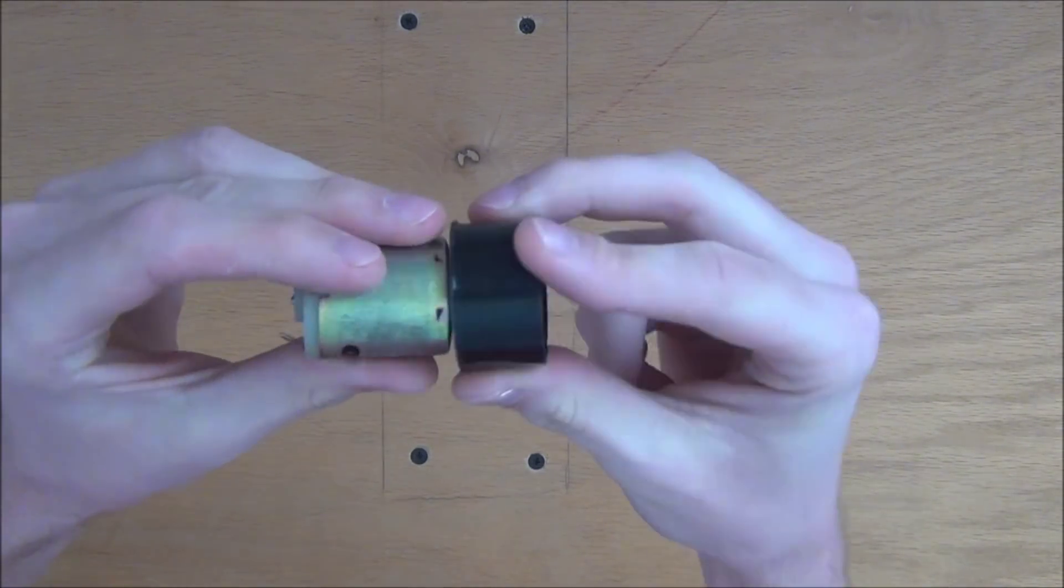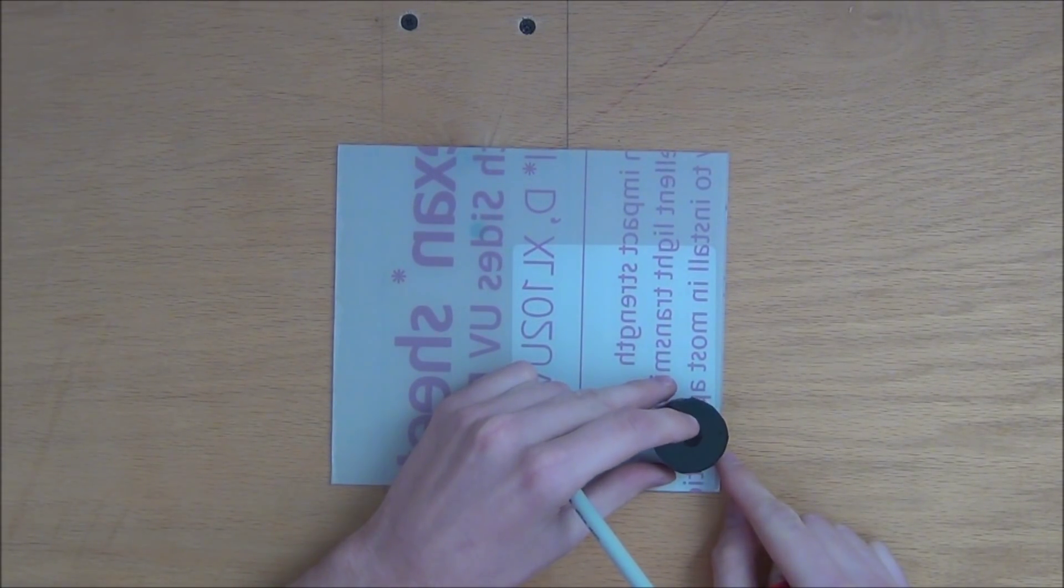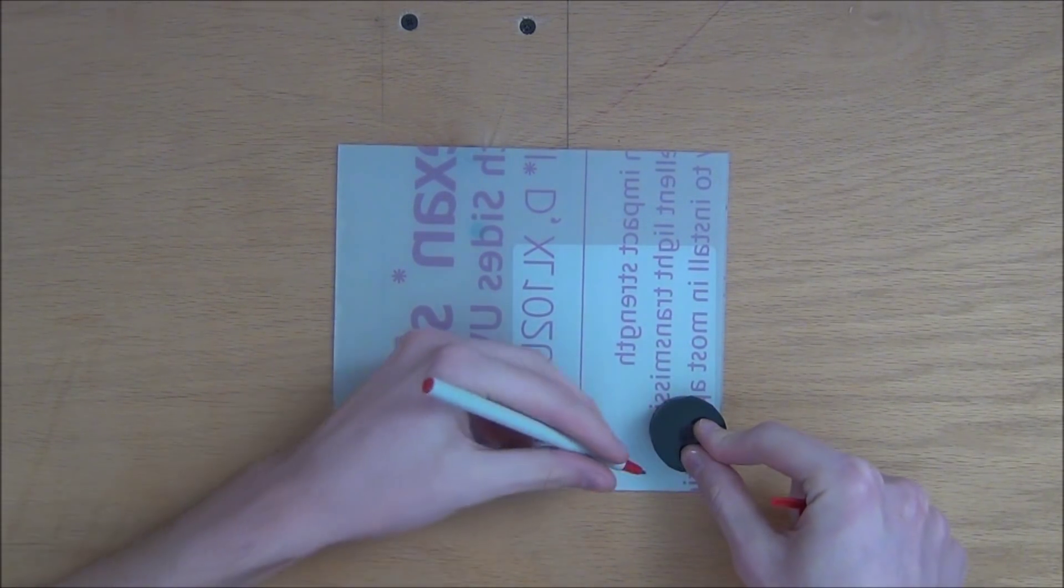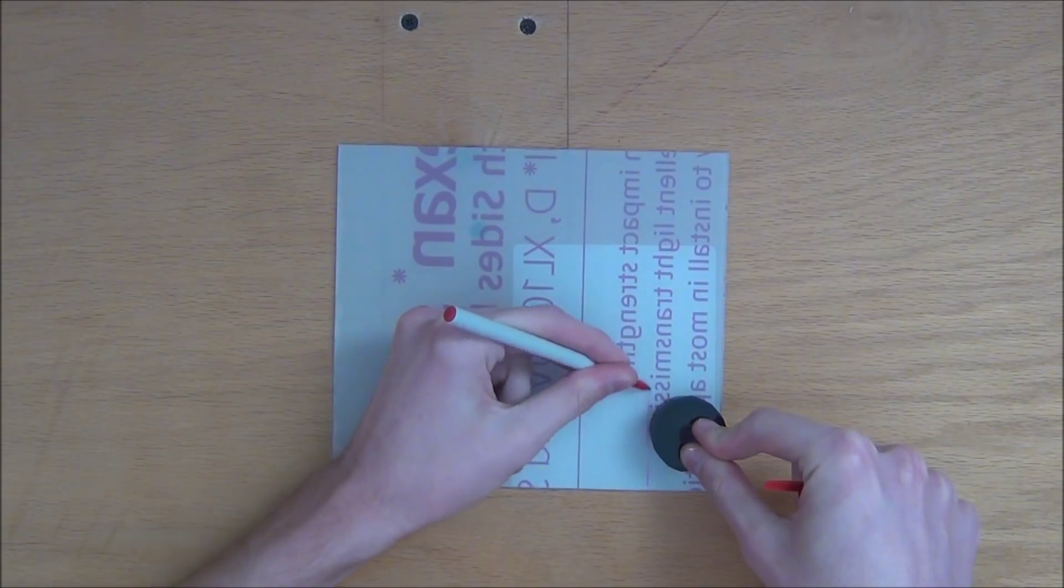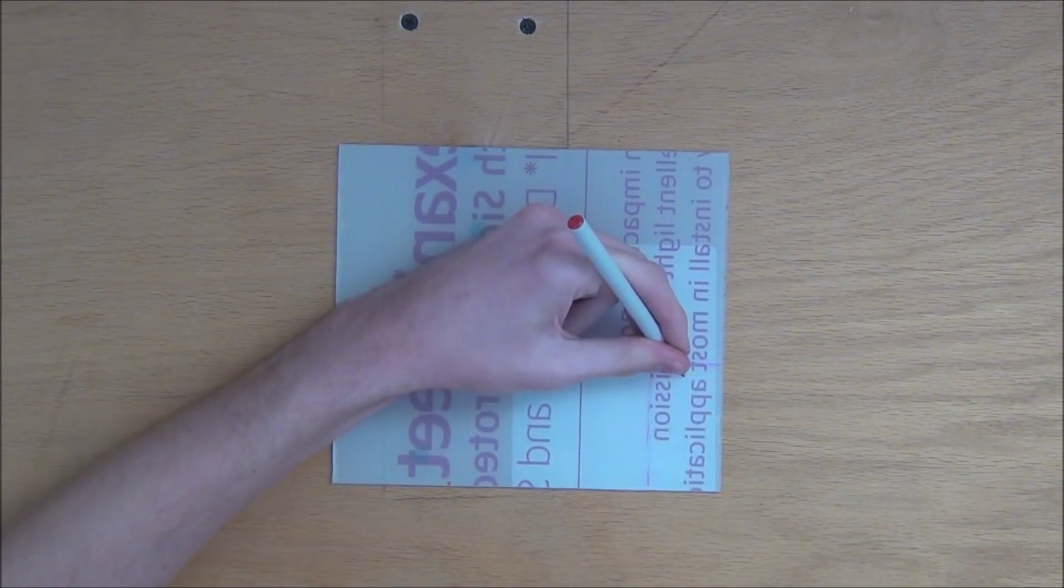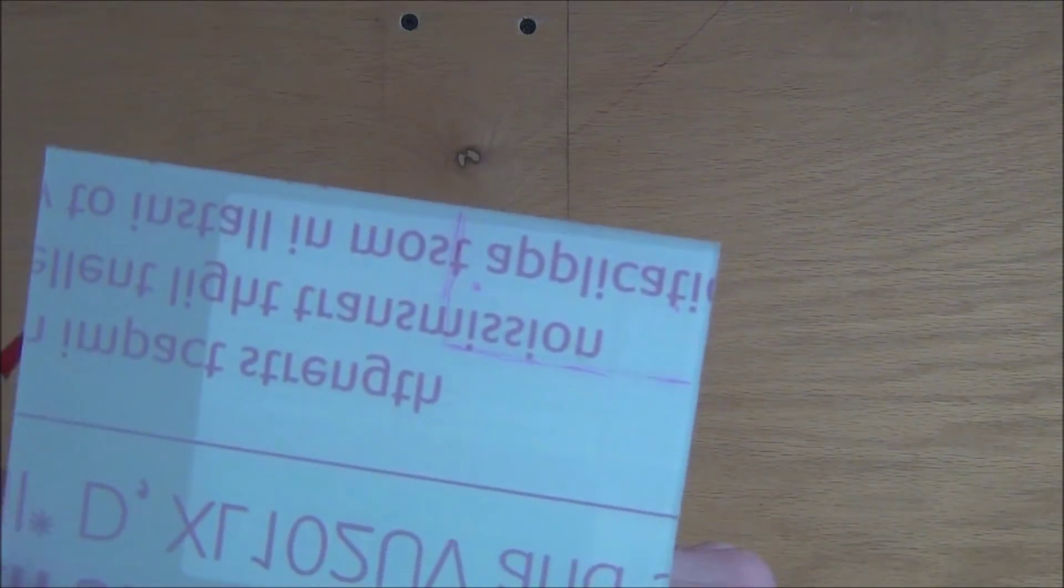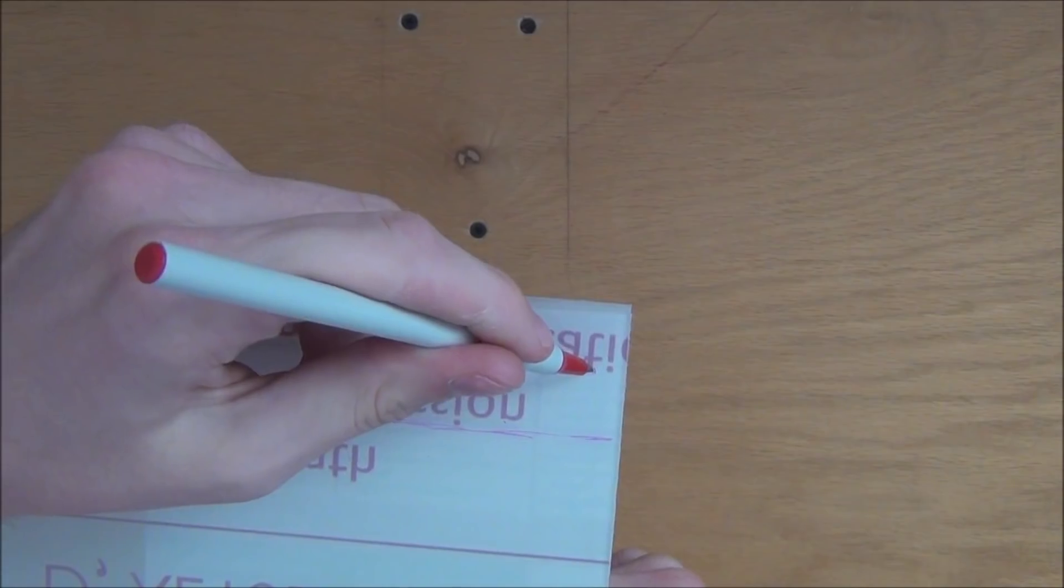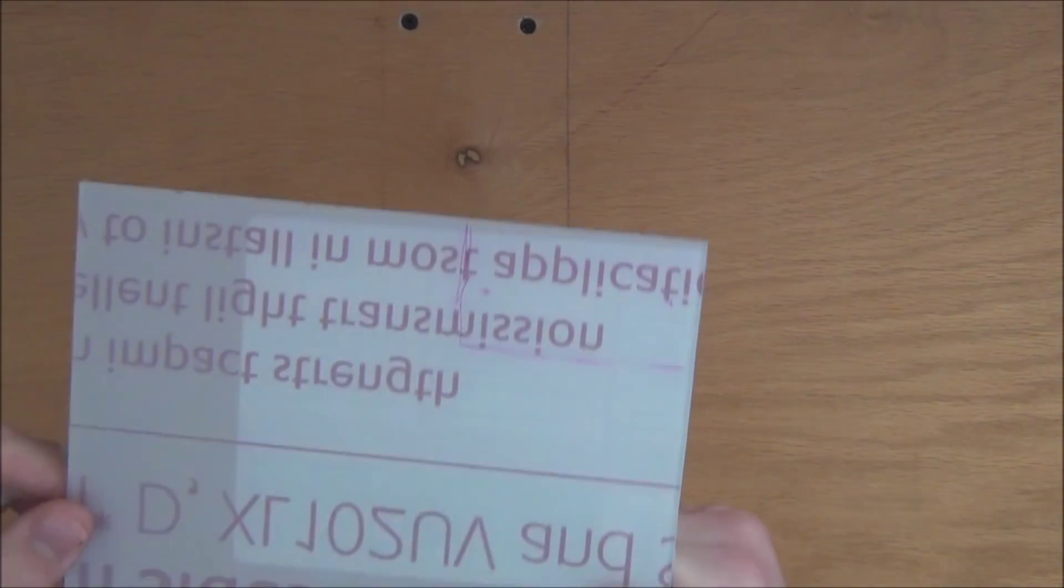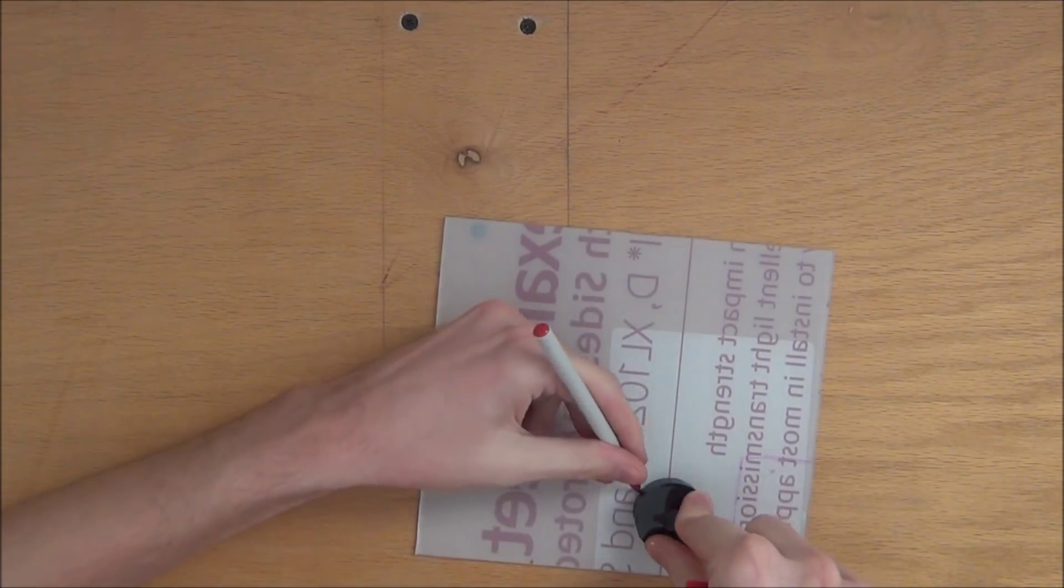Now we'll take the piece of Lexan and trace a rectangle around this plastic cap. We'll cut this out, smooth out the edges, and drill holes right here and right here. This will be our base plate for the whole assembly.